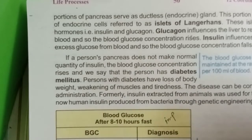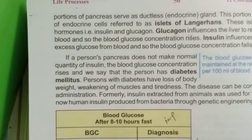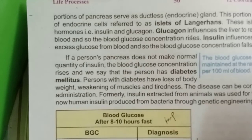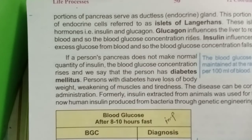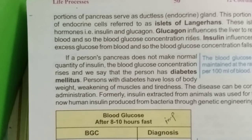The last endocrine glands to cover are the gonads — the male and female reproductive organs, collectively called gonads. The testes are the male reproductive organs, and the ovaries are the female reproductive organs.